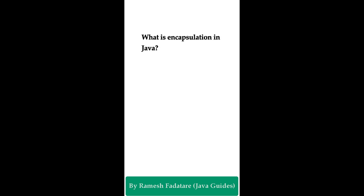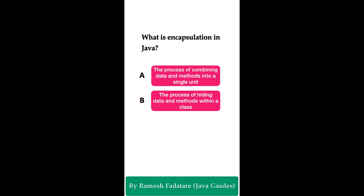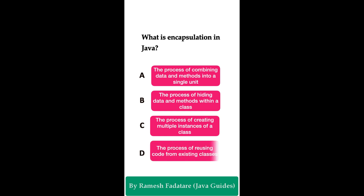Welcome to Java Quiz Series. Here is one more question: What is encapsulation in Java? Option A: the process of combining data and methods into a single unit. Option B: the process of hiding data and methods within a class. Option C: the process of creating multiple instances of a class. Option D: the process of reusing code from existing classes. You have five seconds to answer.